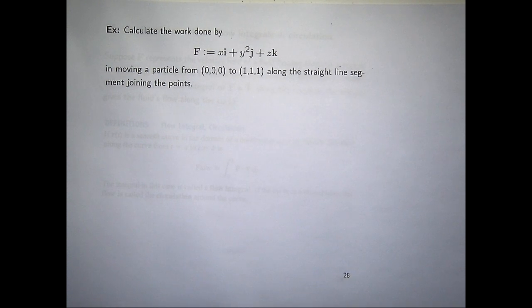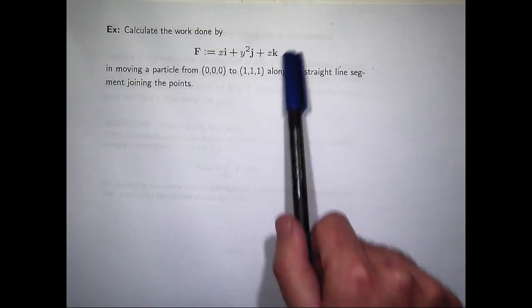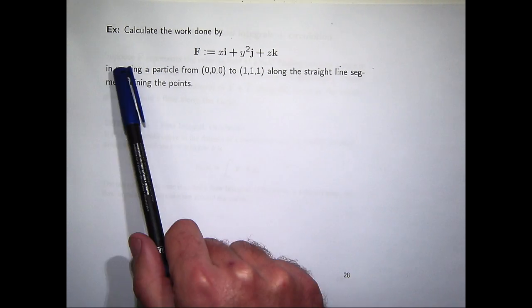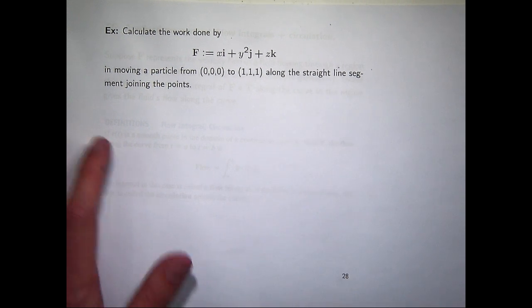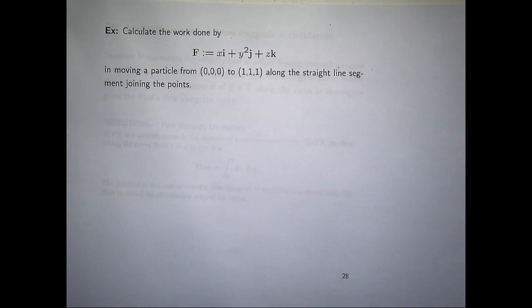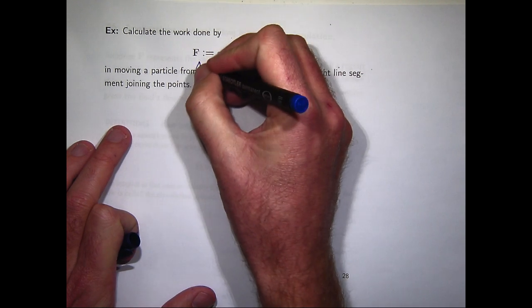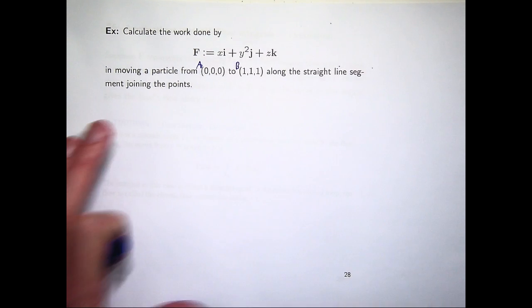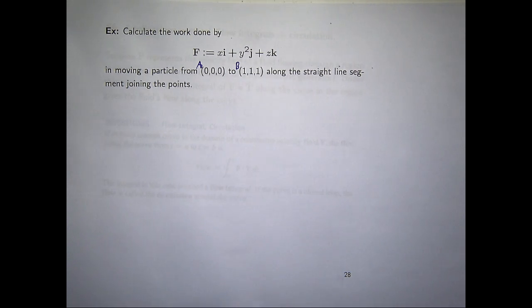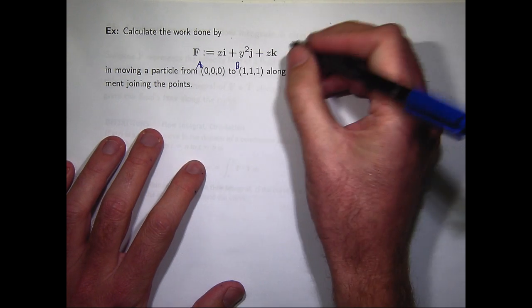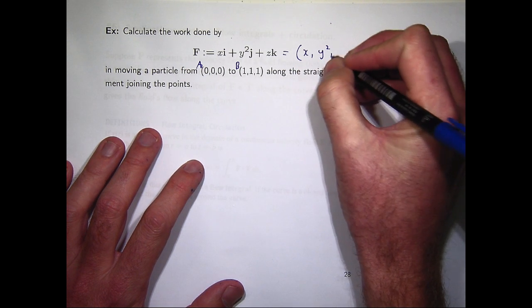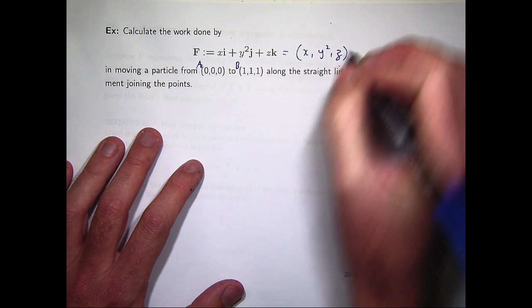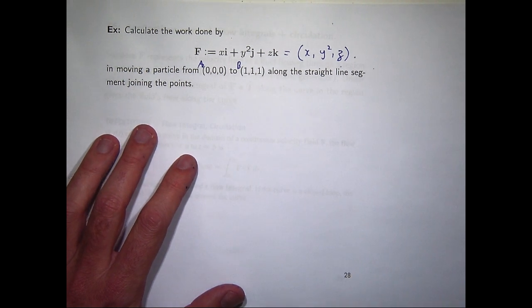In this example, we're asked to calculate the work done by this vector field in moving a particle from the origin to this point along the straight line segment joining the two points. So I'm going to let's just make A the origin and B 111. Here I've got the IJK notation. You could also write this, as I do, as an ordered triple.